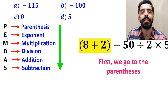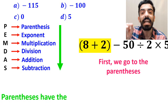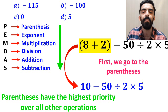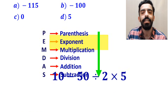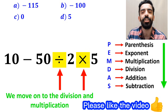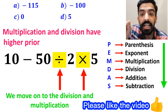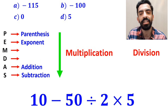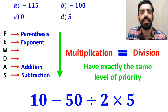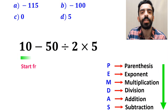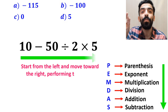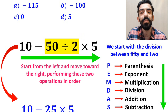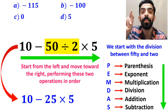First we go to the parentheses, because according to the PEMDAS rule, parentheses have the highest priority over all other operations. So, we rewrite this expression as 10 minus 50 divided by 2 times 5. In the next step, we move on to the division and multiplication, because multiplication and division have higher priority than subtraction. However, it's very important to note that multiplication and division have exactly the same level of priority. In this situation, the best approach is to start from the left and move toward the right, performing these two operations in order. So, first we start with the division between 50 and 2, which simplifies this expression to 10 minus 25 multiplied by 5.